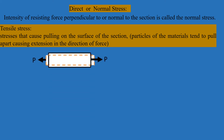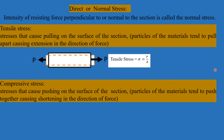Because of the application of pulling forces in opposite directions, the length of the bar increases along the direction of the applied load. The tensile stress sigma is equal to P divided by A.